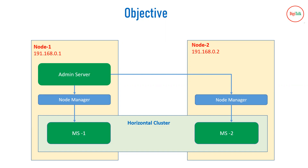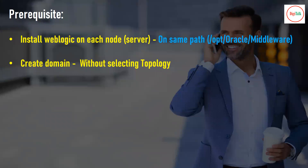So let us see how we can do horizontal clustering using the admin console. The prerequisites before going for horizontal clustering: because we want a horizontal cluster between two nodes, you need the installation of WebLogic on both nodes. An important point here is you have to install WebLogic server on the same path. For example, if on node 1 you have installed it on /opt/oracle/middleware, make sure to install on node 2 as well on the same path.